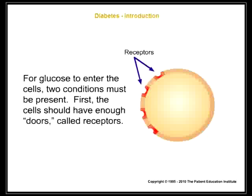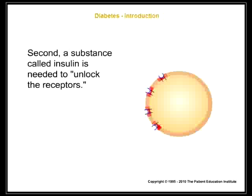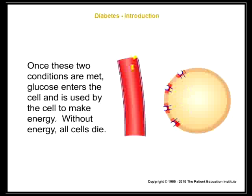First, the cells should have enough doors, called receptors. Second, a substance called insulin is needed to unlock the receptors. Once these two conditions are met, glucose enters the cell and is used by the cell to make energy. Without energy, all cells die.